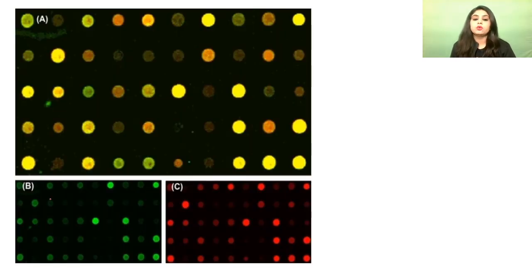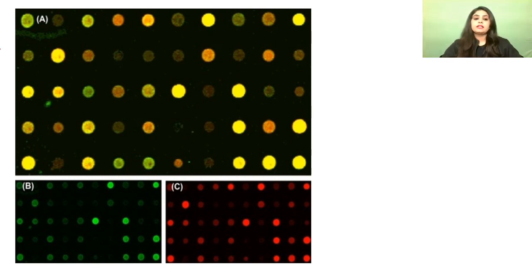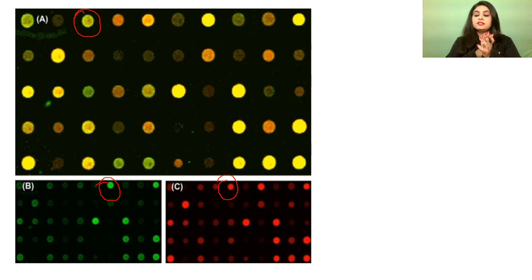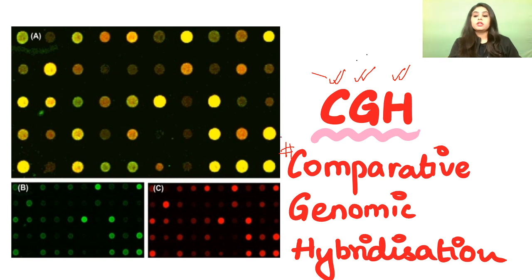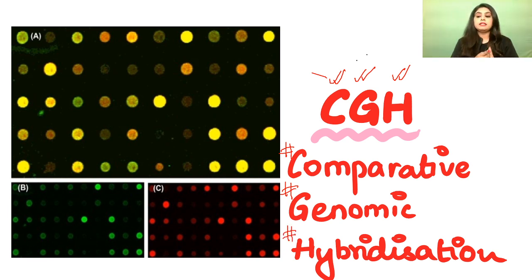CGH — comparative genomic hybridization — uses two colour codes: green and red. The normal person, whose genes are normal with no mutations, has their genome labeled green. The person who wants to be tested — the test person who wants to know whether they have any gain or loss of function mutation — is labeled red. You're going to hybridize both genomes and then compare them.